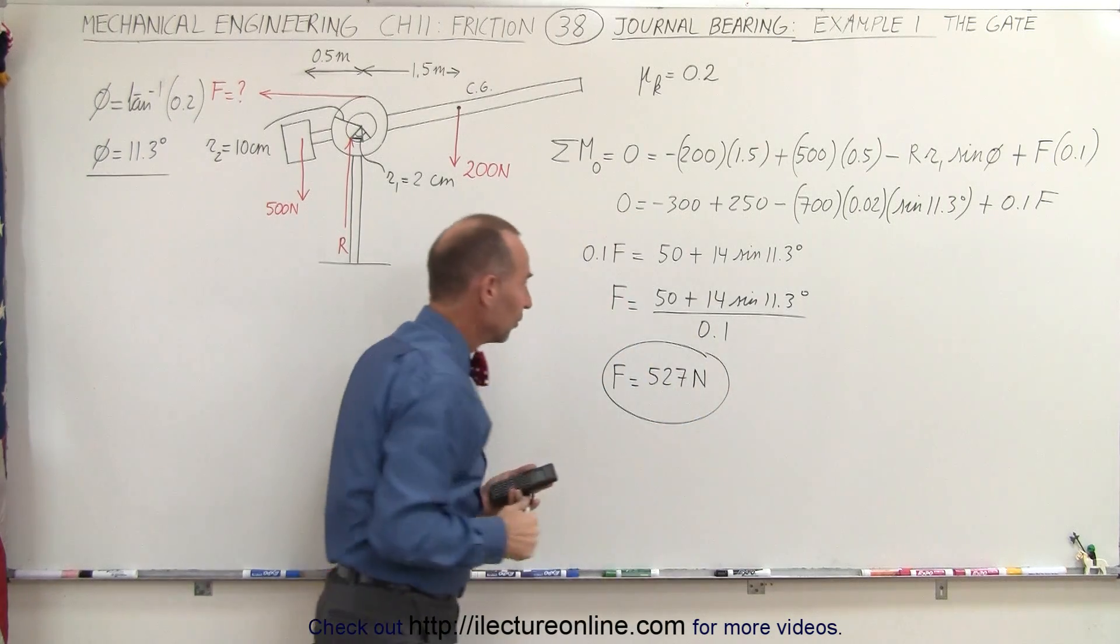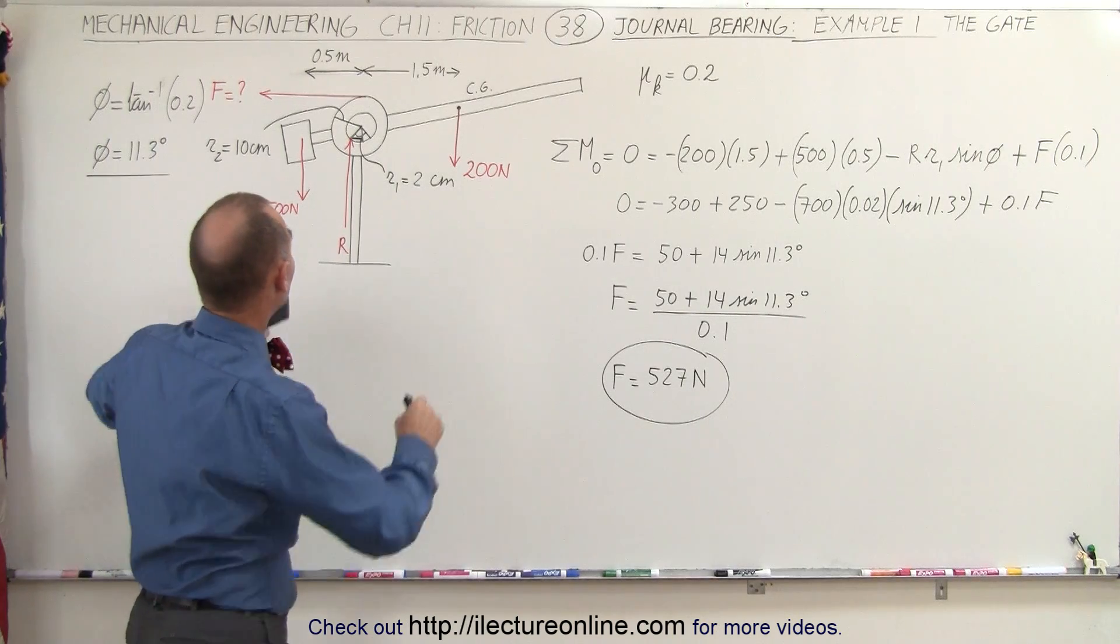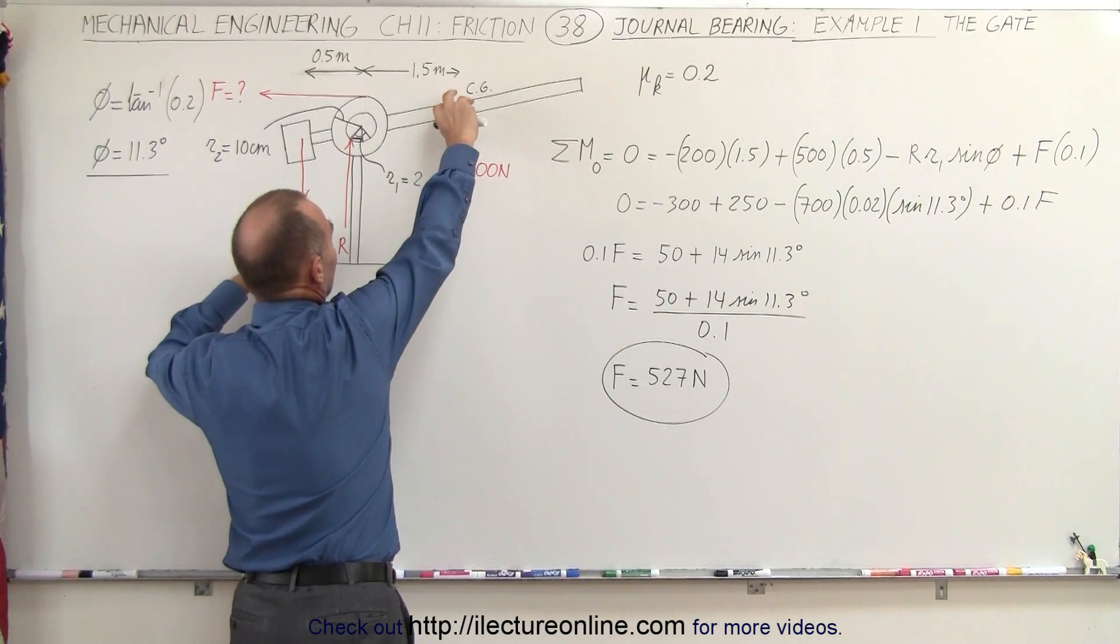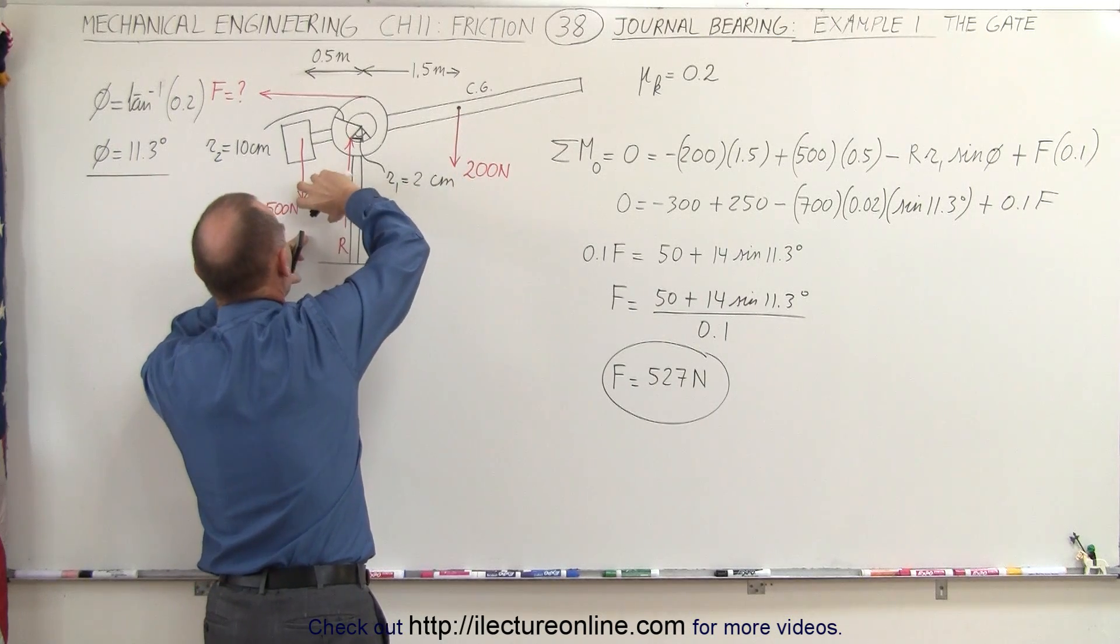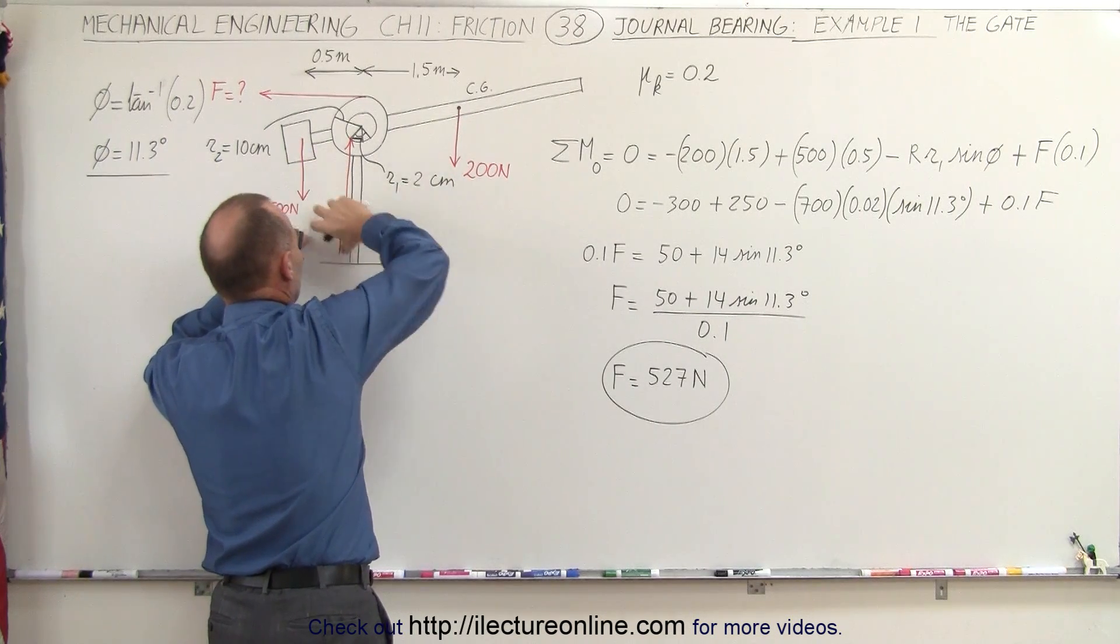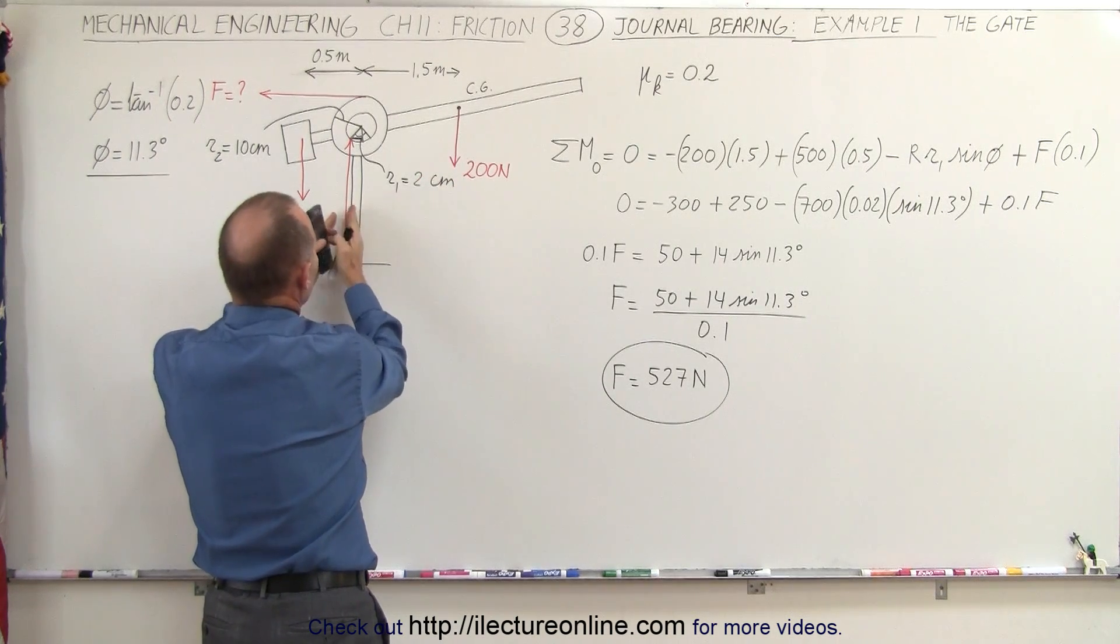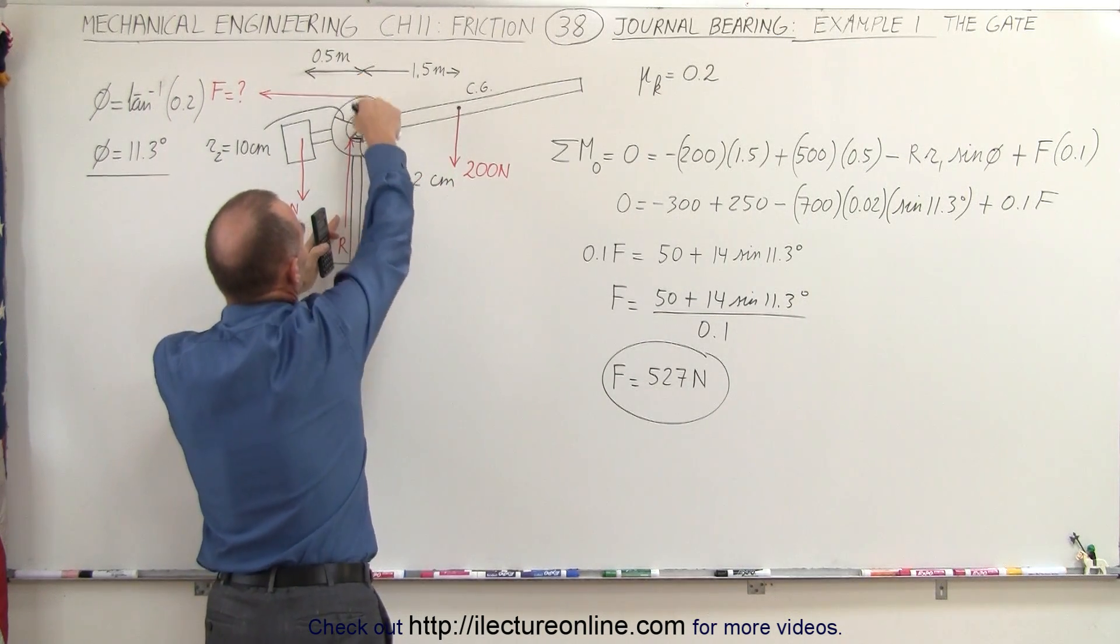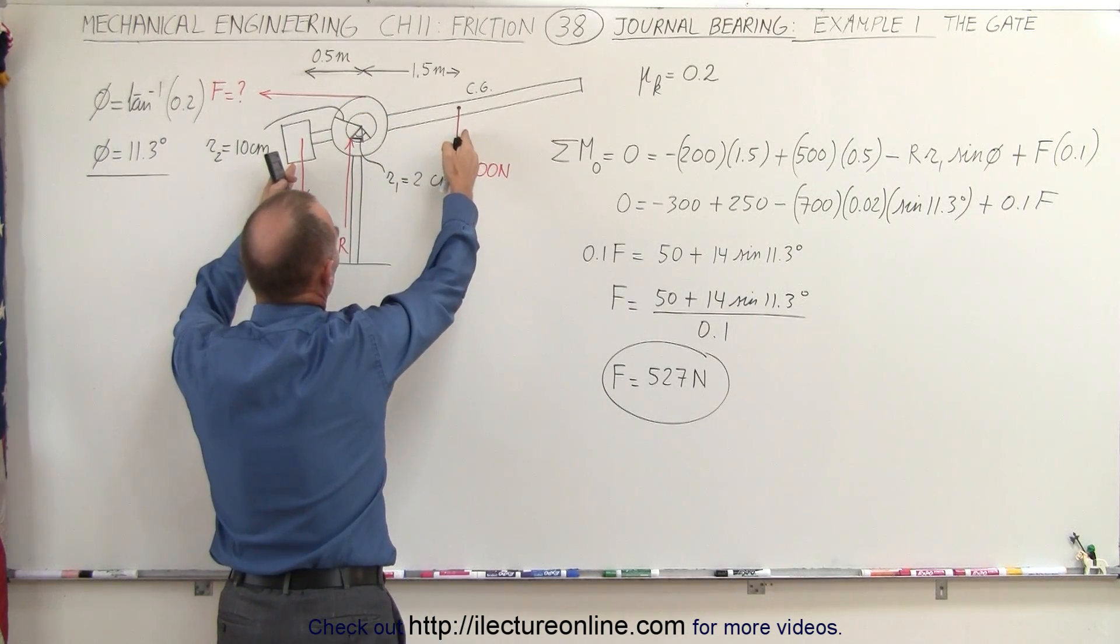So going back and reviewing a few things. First of all, we can see that we have the weight of the gate giving us a clockwise moment, the counterbalance giving us a counterclockwise moment. The magnitude of the reaction force always equals the magnitude of the weight, and in this case that will be the sum of these two that constitutes the weight of the gate.